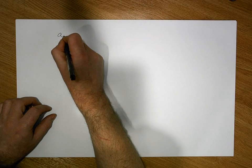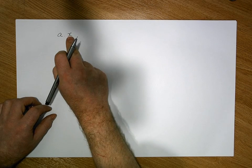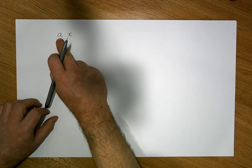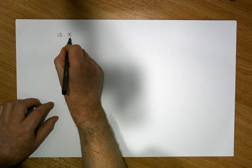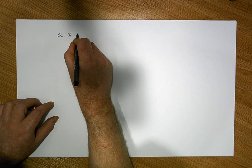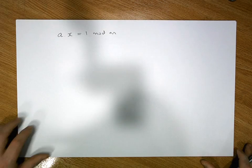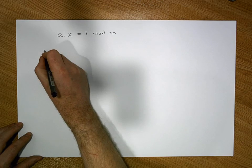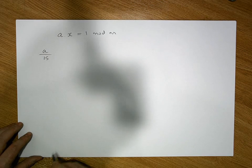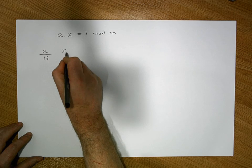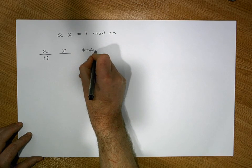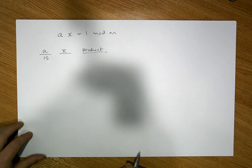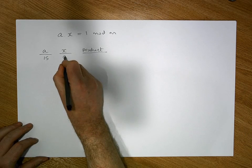When we talk about inverses, because we're dealing with integers, the question we're asking is: can we find some value x such that when we multiply it by a and divide by m to find the remainder, we get 1? So the formula is: we need to find an x such that a times x is equal to 1 modulo m. We know a is 15, so we need to find candidate x values where, when we multiply them together and calculate the product modulo m, we get 1.